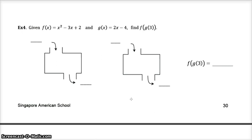Find f of g of 3. You could use these pictures if you want to, but you don't really need to. g of 3, let's find this stuff by itself. g of 3 is 6 - 4 is 2. So really what I'm looking for here is f(2), and f(2) is 4 - 6 + 2, I think is 0. Good for me.